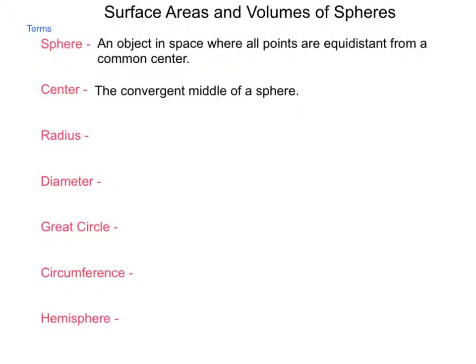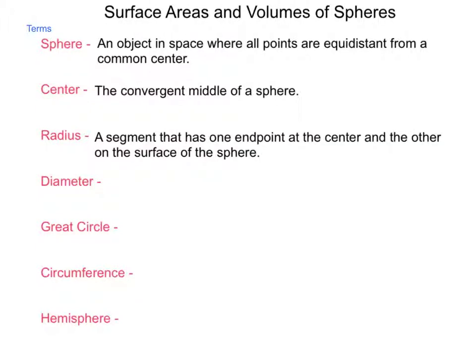Next, radius. In this case, a radius is a segment that has one endpoint at the center and the other on the surface of the sphere.